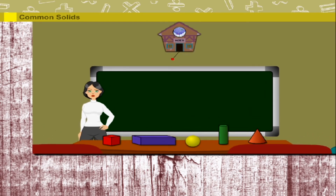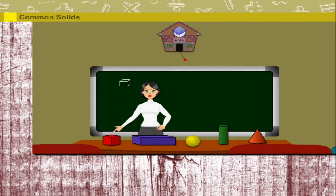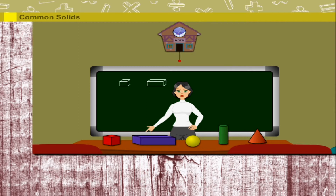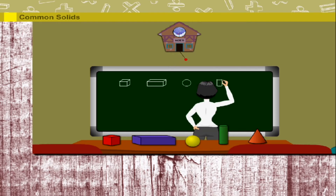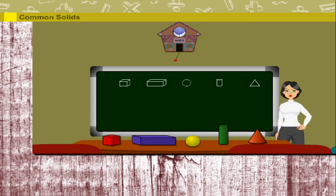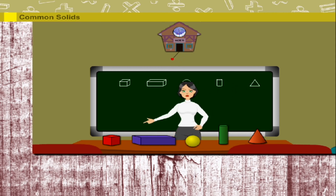Common Solids. A sphere is a circular ball with no sides. This is a cylinder with two circular sides at the top and bottom. This is a cone with a curved triangular side and a circular bottom. Remember their names and shapes: a cone, a cylinder, a cuboid, and a cube.